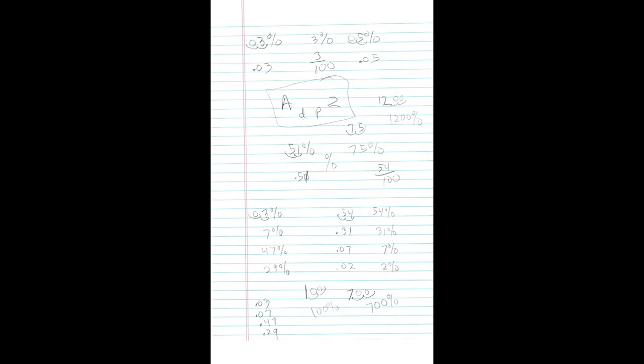You divide the denominator at the bottom into the numerator. For instance, if I had something like two fifths and I want to convert that into a decimal, I divide my bottom denominator into the numerator. Five goes into two zero times, so I add a decimal and a zero. Five goes into twenty four times. Four times five is twenty, subtract with zero. So two fifths is equal to point four.